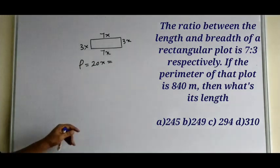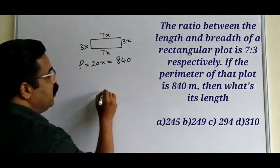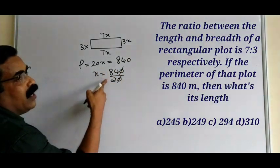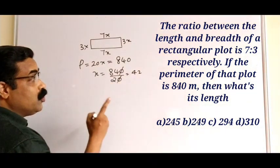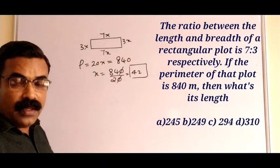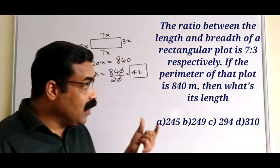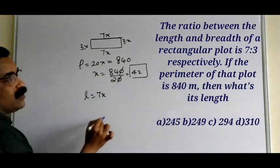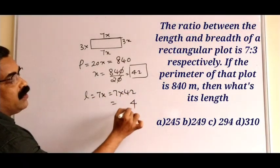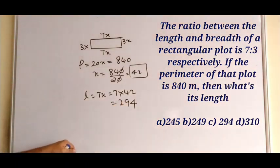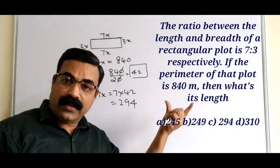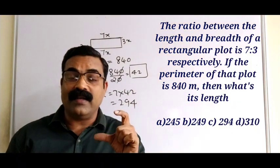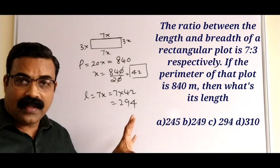The perimeter is given as 840 meters. So 20x = 840, which gives x = 840 ÷ 20 = 42. We need to find the length, which is 7x = 7 × 42 = 294 meters. Mark the correct option accordingly. The calculation is not tough — you just need to understand what is asked and proceed. Practice more questions to increase your speed.